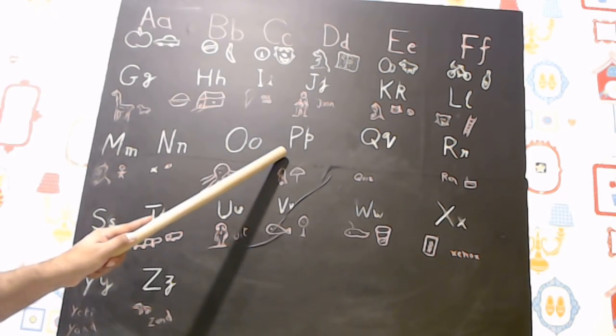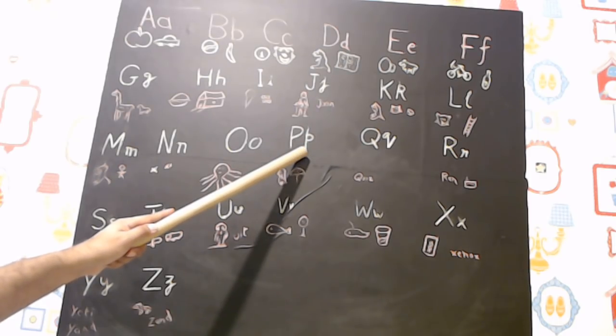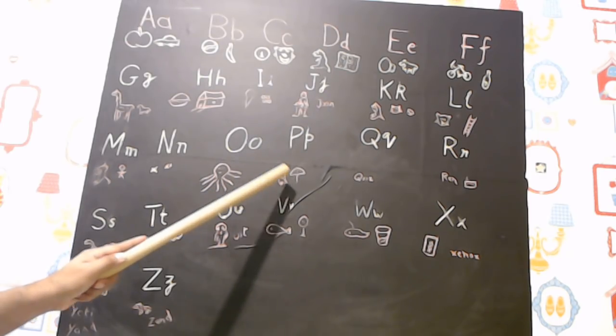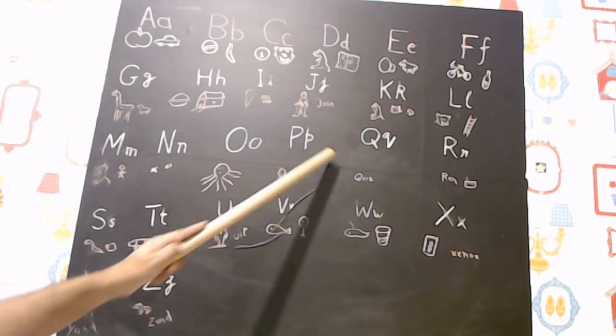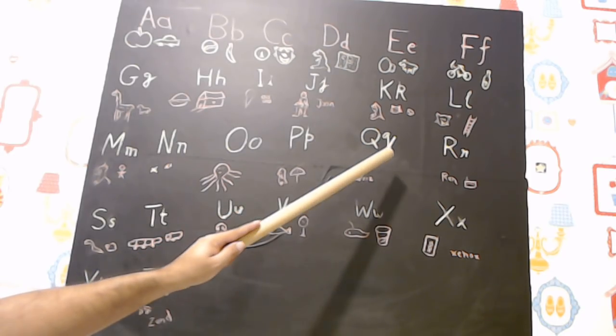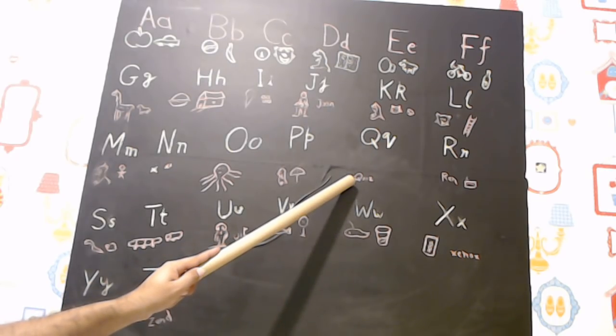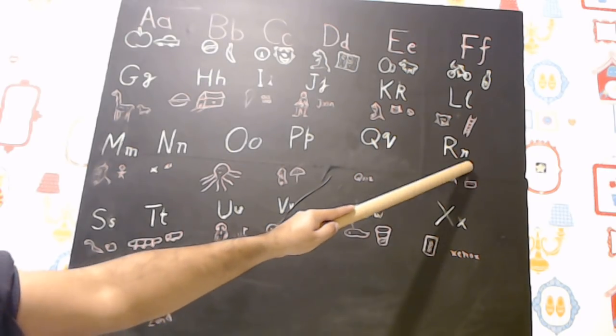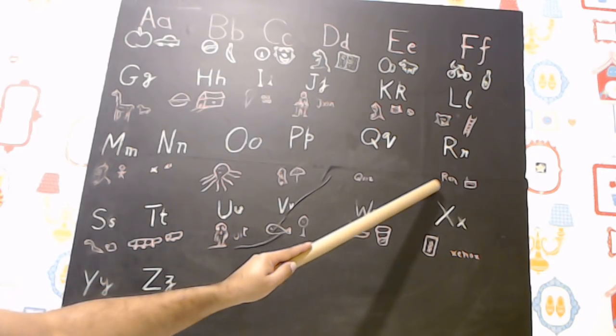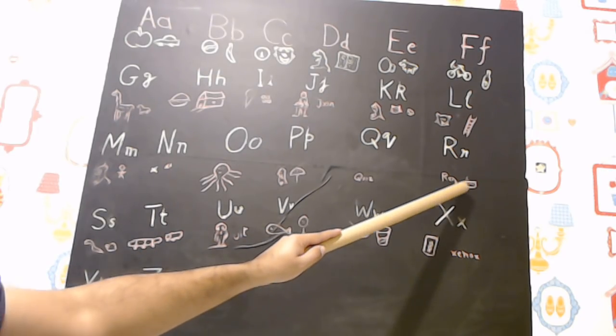P, pay, penguin, paraplu. Q, ku, quiz. R, air, ren, radio.